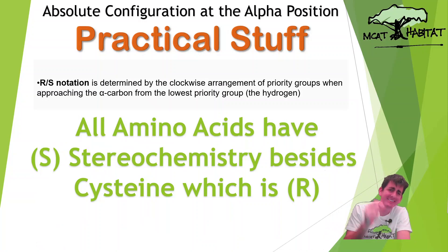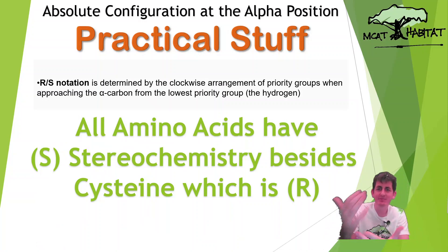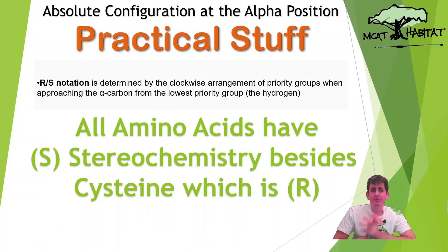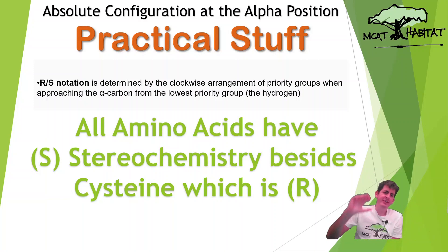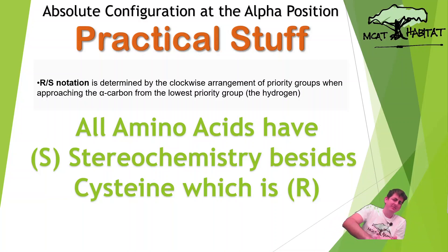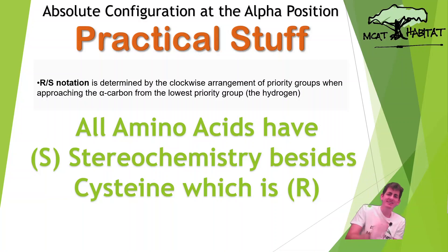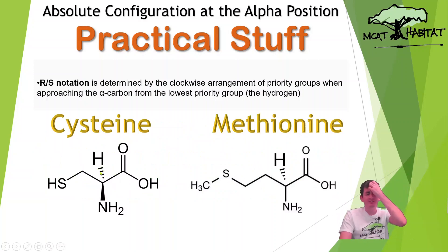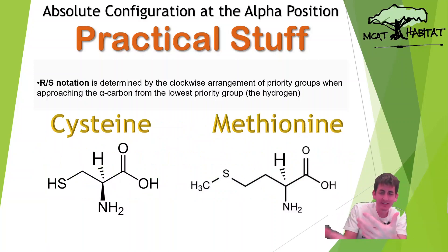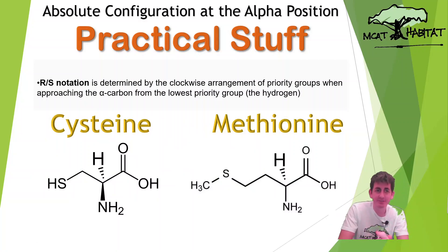R and S is determined by the arrangement of priority groups when approaching the alpha carbon from the lowest priority group. Before we look into that, this is really important: all amino acids have S stereochemistry besides cysteine, which has R stereochemistry. So cysteine has an exception to this rule. Cysteine has R; every other amino acid will have S.